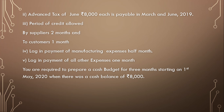The period of credit allowed by suppliers is two months and to the customers it is one month. So from creditors we have got two months credit and to the debtors we have given one month credit. Lag in payment of manufacturing expenses is half month, and lag in payment of all other expenses is one month.